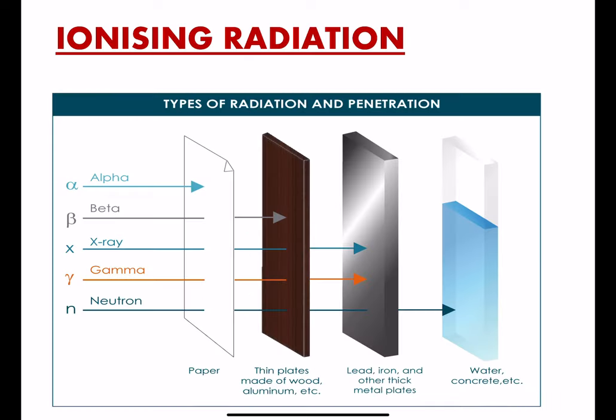Radiation is classified into ionizing and non-ionizing. When we talk about radiation, it is part of the electromagnetic spectrum which consists of electricity and magnetism. These deal with electrically charged particles and interact with each other within the magnetic field.